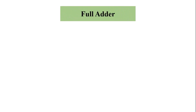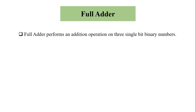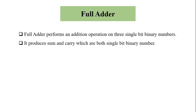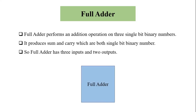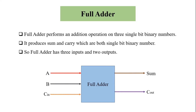Now we will perform the full adder circuit. A full adder performs an addition operation on three single bit binary numbers. It produces SUM and carry, which are both single bit binary numbers. So a full adder has three inputs and two outputs. This is the block diagram of full adder, where A, B and CIN are the inputs and SUM and COUT are the outputs.